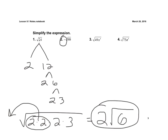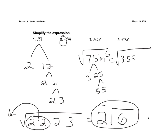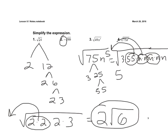We have the square root of 75n⁵. First, do the factor tree for 75: that's 3 and 25, then 25 splits into 5 and 5. So we rewrite this as 3 times 5 times 5 times n times n times n times n times n, all under the radical. Because we're doing square roots, we take pairs: there's a pair of 5s, one pair of ns, and another pair of ns. Each pair contributes one factor outside the radical, giving us 5n² on the outside. The remaining factors, 3 and n, stay under the radical. The final answer is 5n² times the square root of 3n.